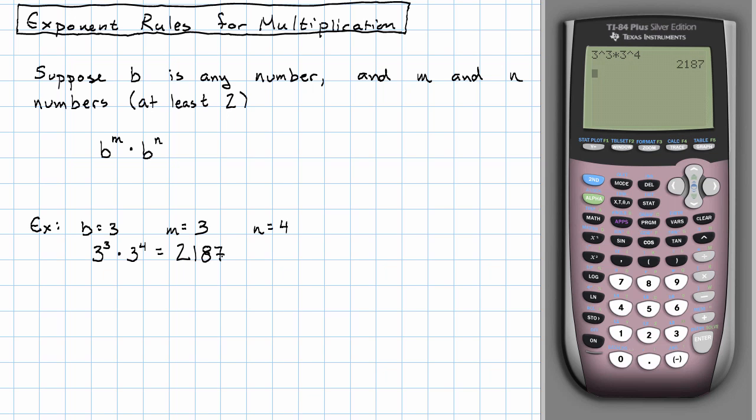Let's think what 3 to the 3rd means. What would we do if we wanted to work out 3 to the 3rd by hand? That would be 3 times 3 times 3. This is 3 to the 3rd.